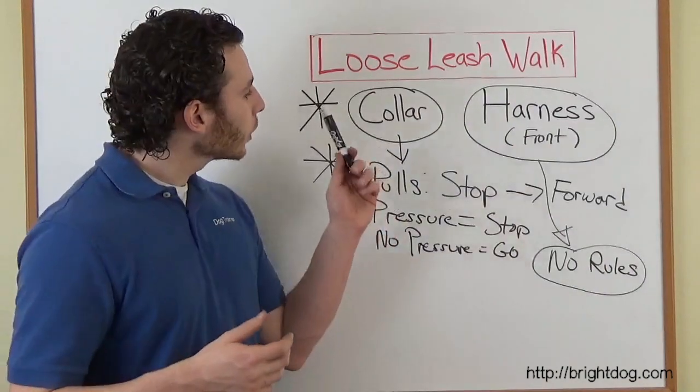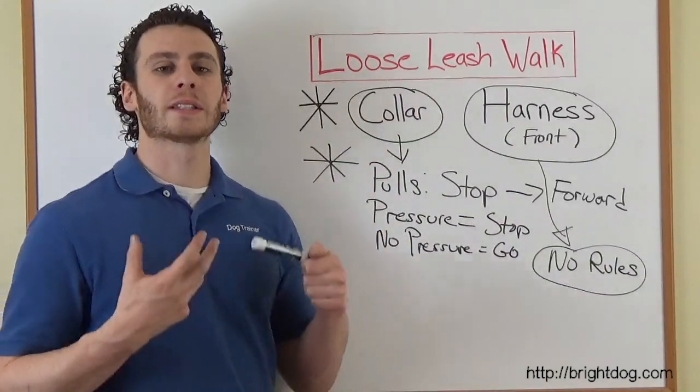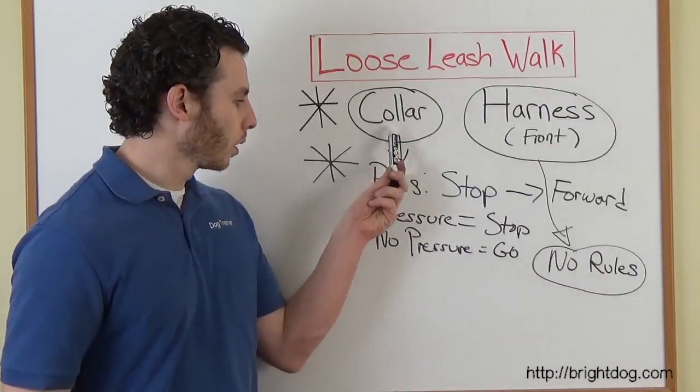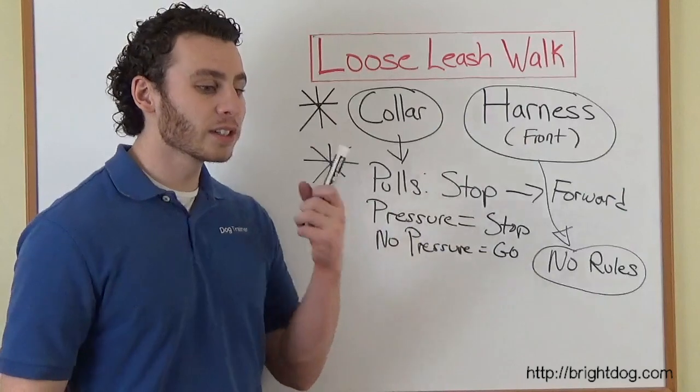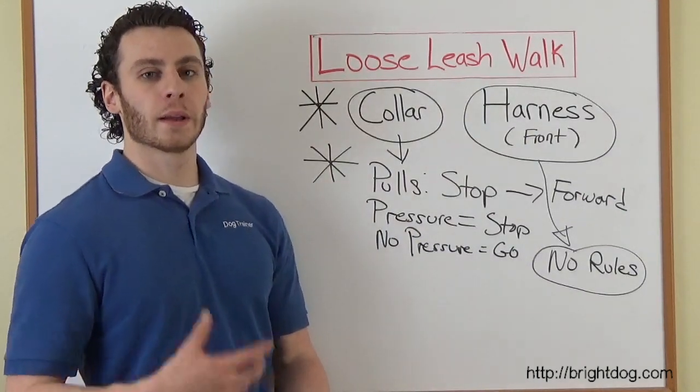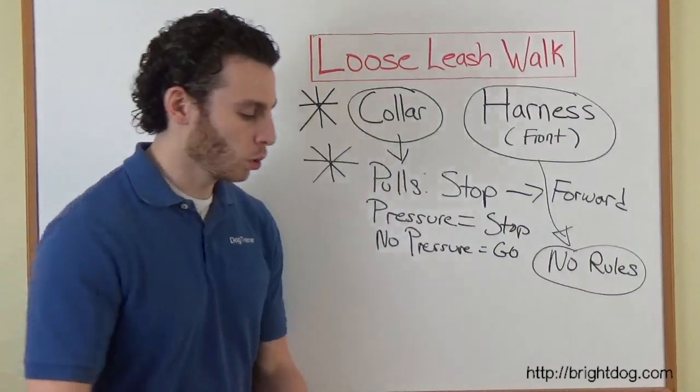So you need to use both. And the reason is so we can stay consistent. We train them on the collar. We follow the rules. Every single time the dog pulls, you stop. Every single time the dog then loosens up the leash, you go forward.